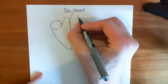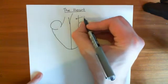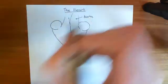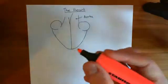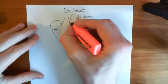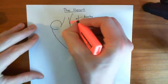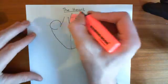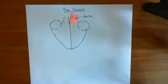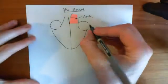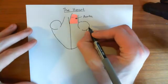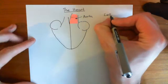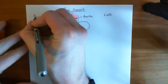Let me label some of these things up. This big artery coming out of the left ventricle represents the aorta — we'll colour the aorta in red here. Now let's label up the chambers. Here is the left ventricle. This is on the left side of your body, and this is the right side of your body here.